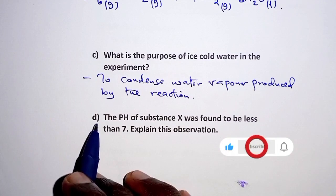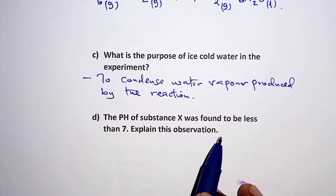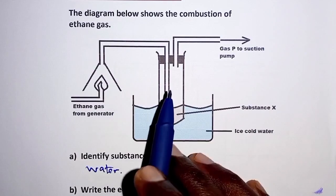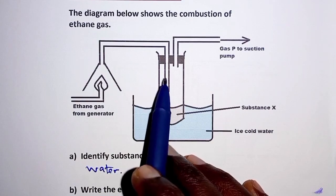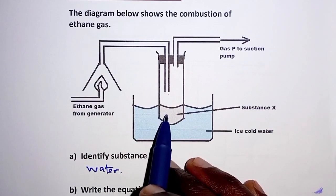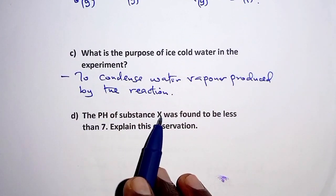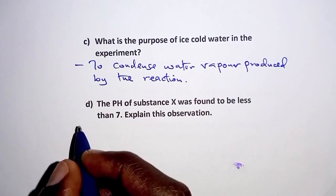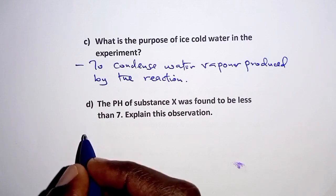For part D, the pH of substance X was found to be less than 7 — explain this observation. We recall that ethane gas burned in oxygen produces carbon dioxide and water. Some of the carbon dioxide dissolves in the condensed water to form weak carbonic acid, and that is why the pH of substance X is less than 7. So we say: some carbon dioxide produced dissolved in condensed water to form weak carbonic acid.